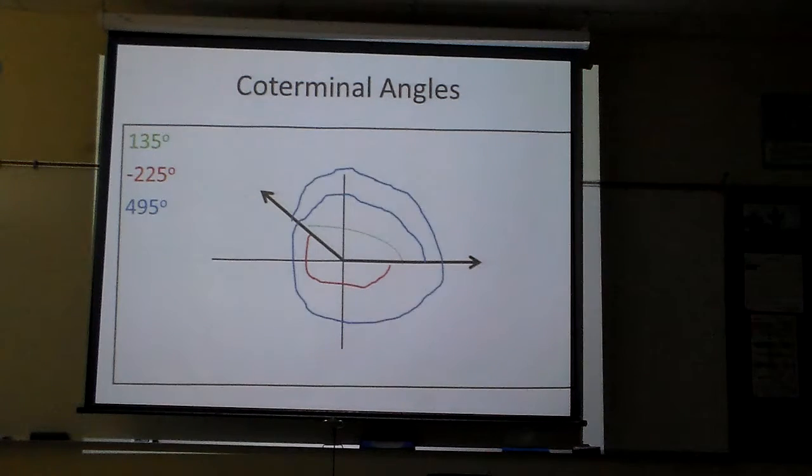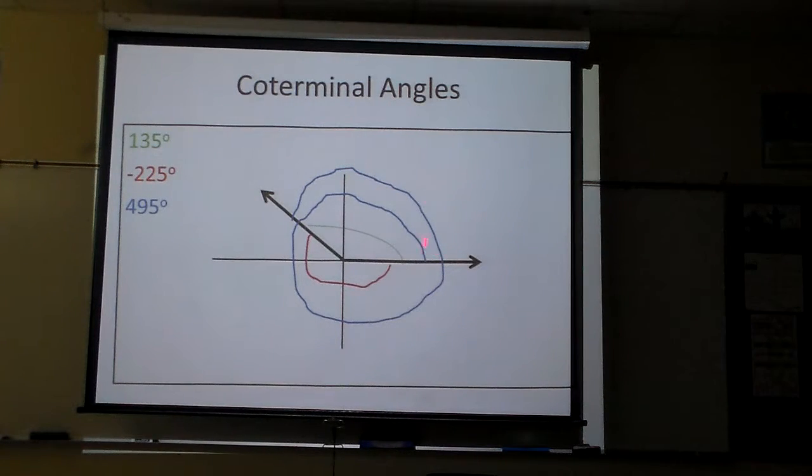And then we have also the 495, which means it went all the way around once, plus another 135 degrees. 360 plus 135 is 495. That's all the coterminal angle is.